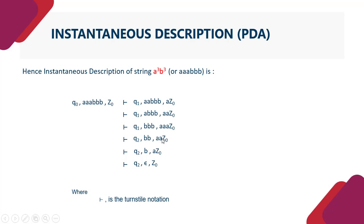When we reached Q2, B was consumed and A was popped. At Q2, B was consumed and A was popped. Now at Q2 we have null and stack has Z0.